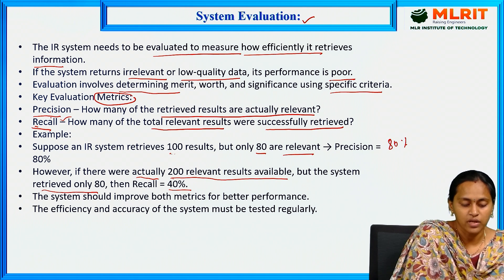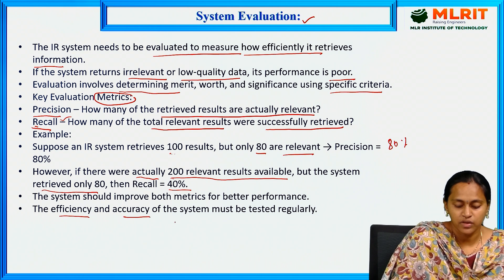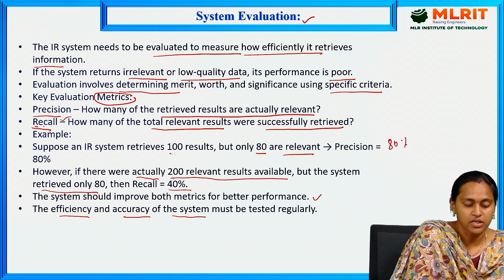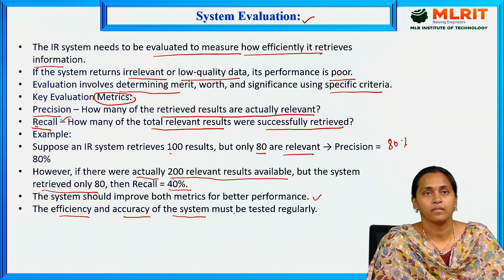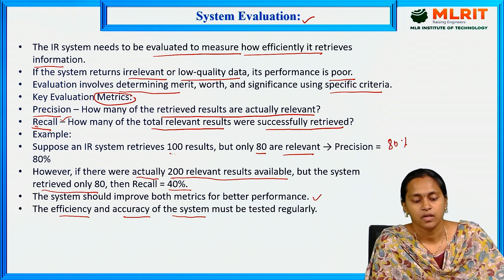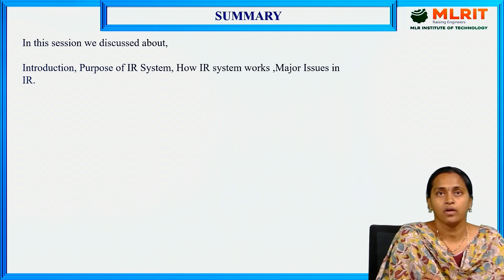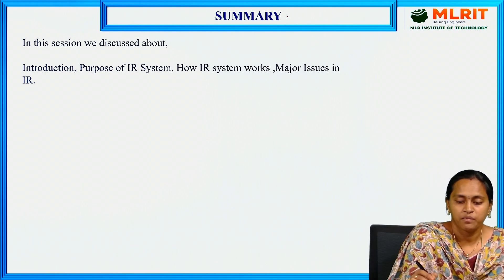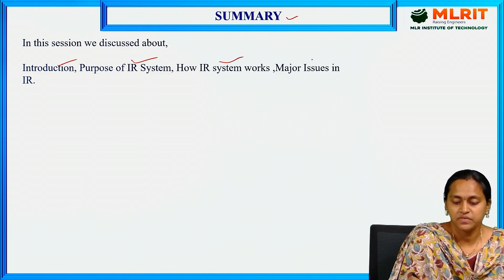We have to improve precision and recall for efficiency and accuracy of the system. This covers the major issues of IR systems: document indexing, query evaluation, and system evaluation. This is the overall discussion about information retrieval — covering introduction, purpose of IR system, workflow of IR system, and major issues in IR system.